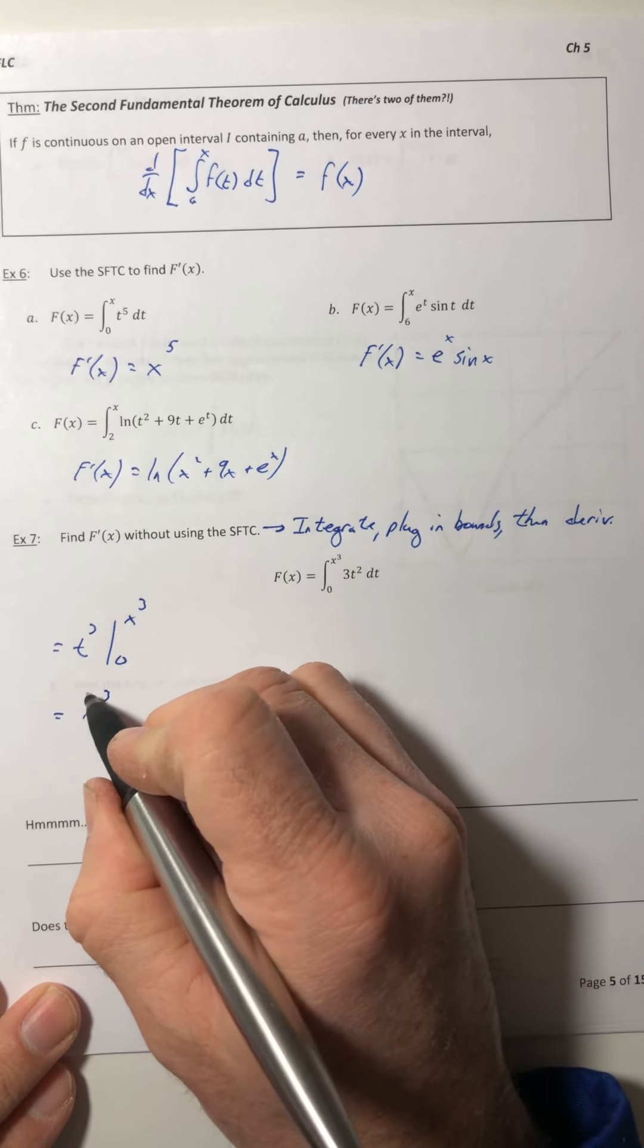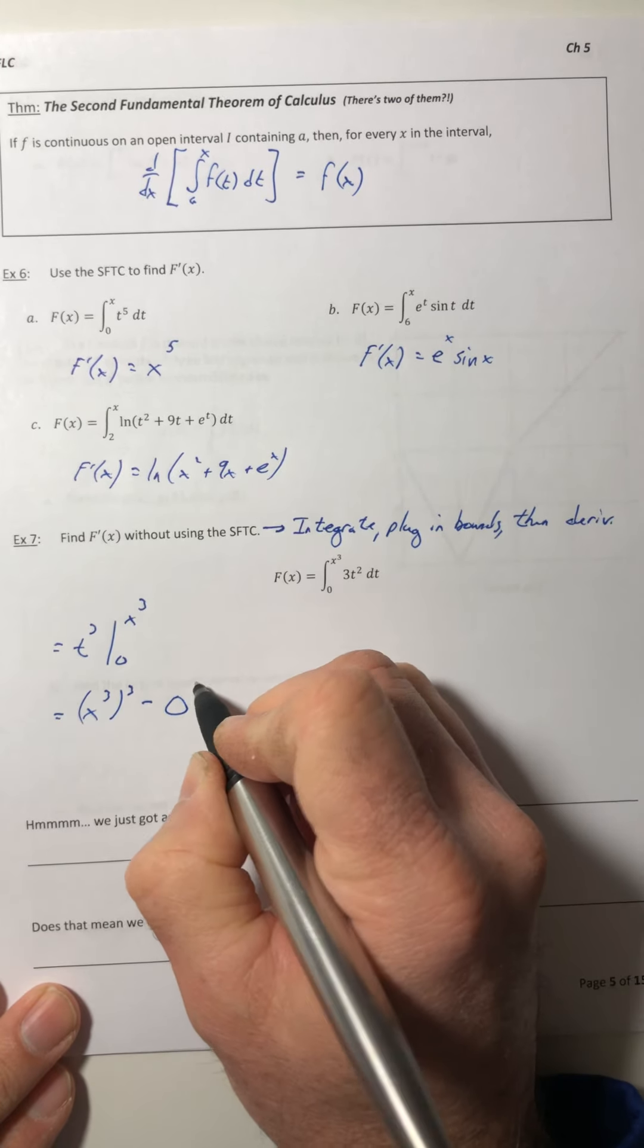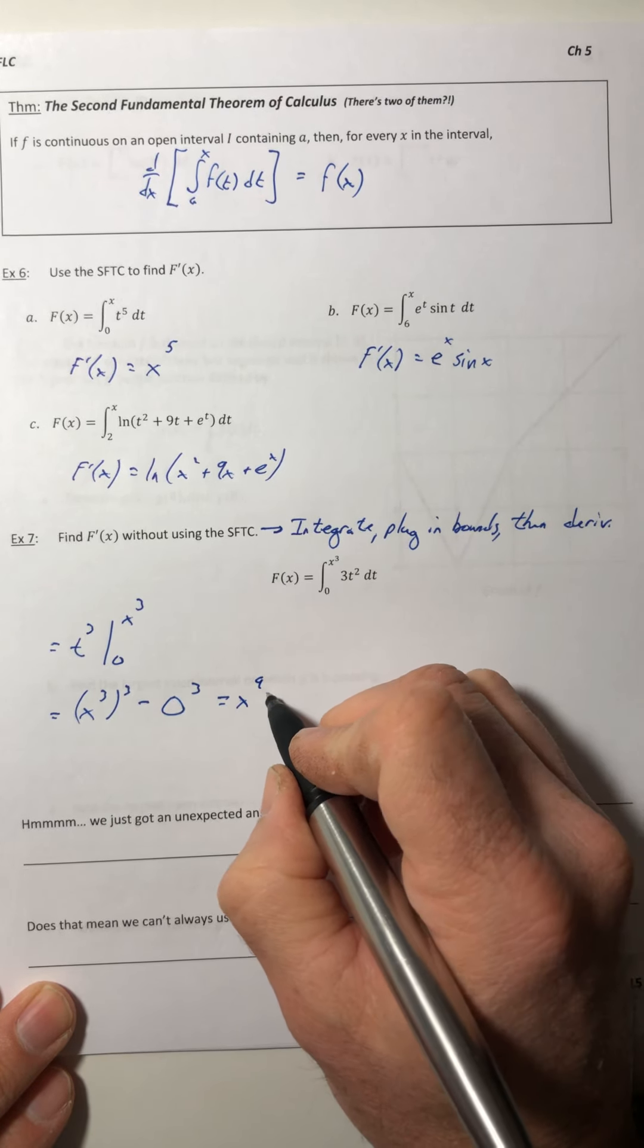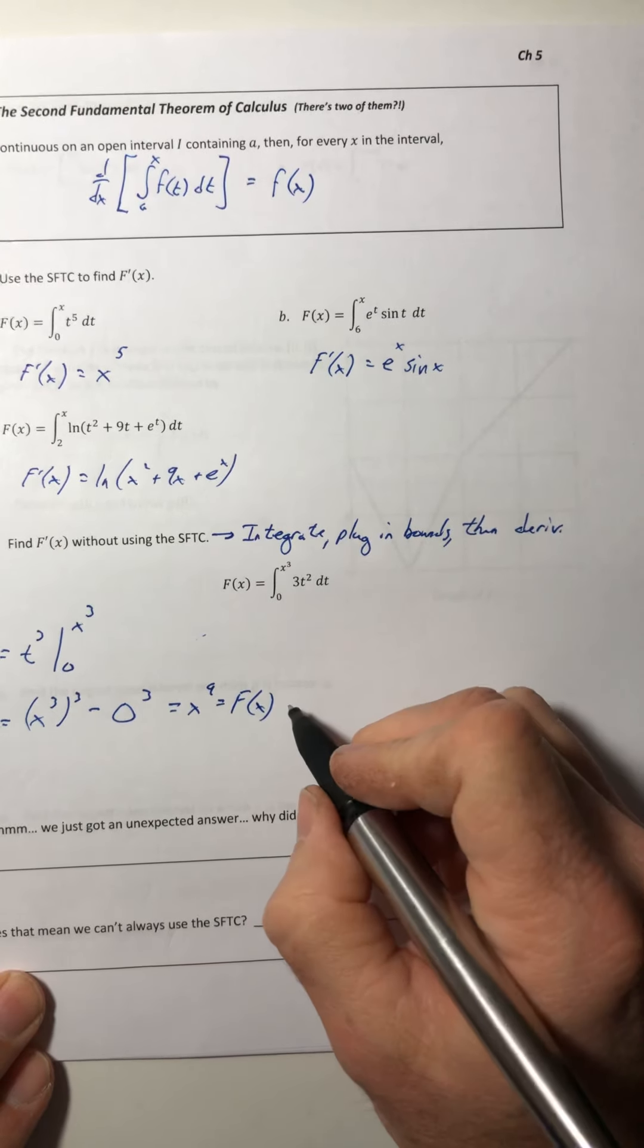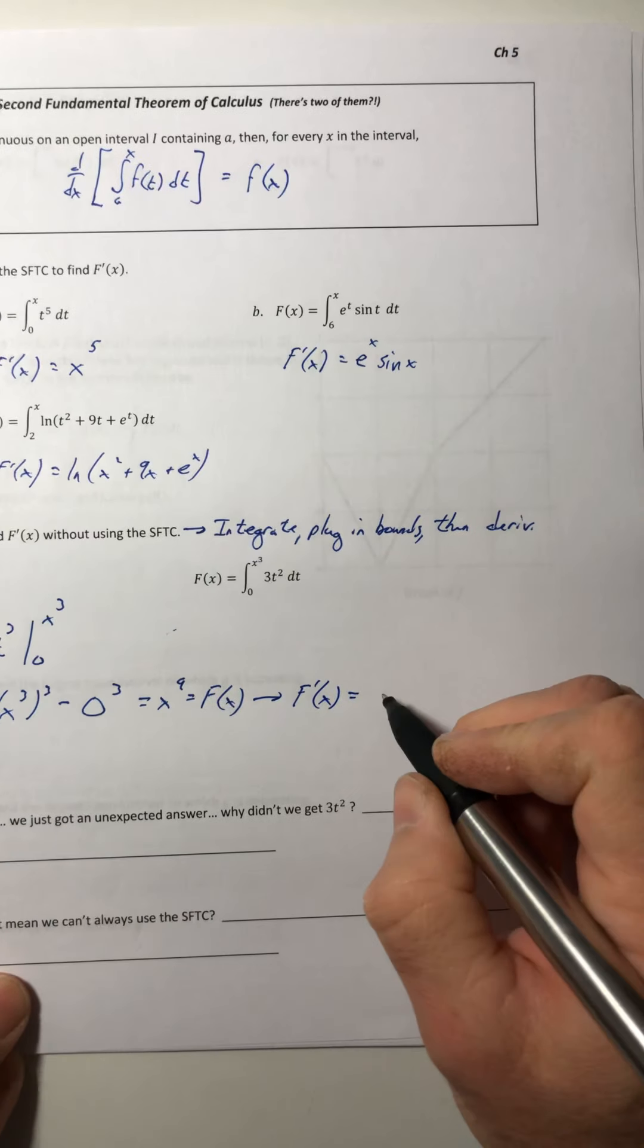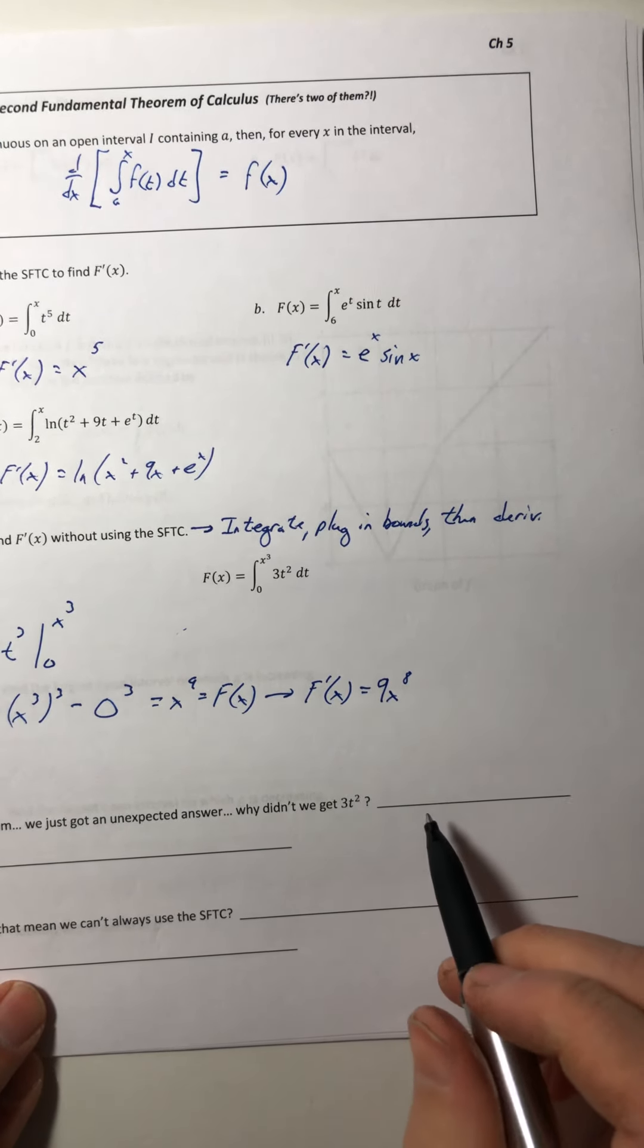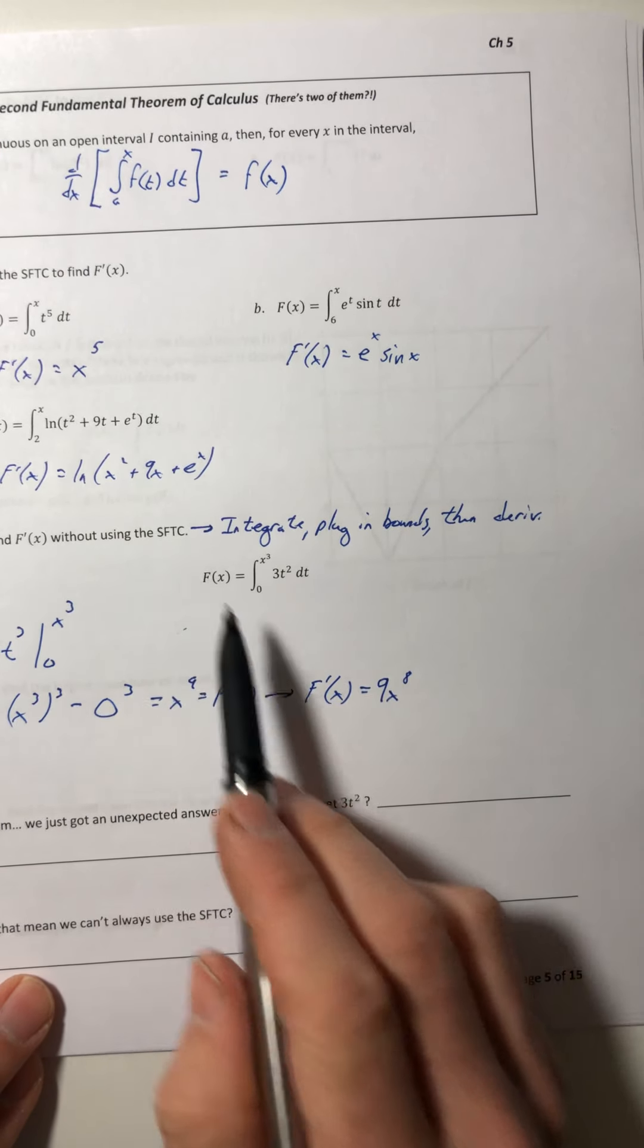So plug in your bounds. So x to the third to the third minus zero to the third, which gives us x to the ninth. And that is still our capital F of x. So we're looking for its derivative, which would be 9x to the eighth.